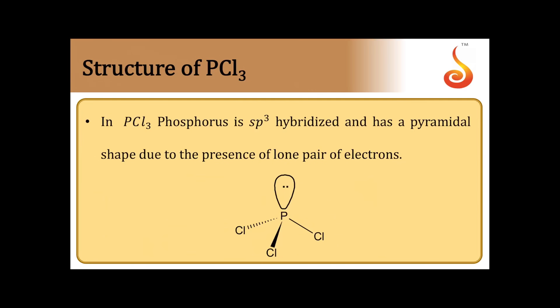Now comes the structure of PCl3. It is similar to the ammonia molecule. The central atom phosphorus undergoes sp3 hybridization, and because of the lone pair present, the molecule has a pyramidal structure. Ammonia also has a lone pair on the nitrogen atom, undergoes sp3 hybridization, and is also pyramidal in shape. Both PCl3 and ammonia are pyramidal in shape.